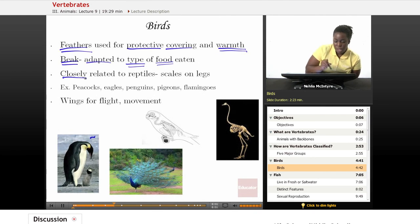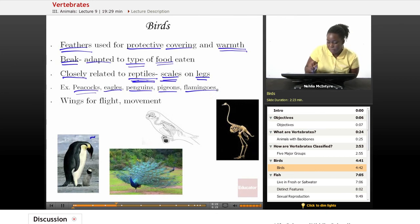Birds also are closely related to reptiles, which we'll talk about, because reptiles and birds both have scales on their legs. Well, birds have scales on their legs, and reptiles also have scales on their body. Some examples of birds would be peacocks, eagles, penguins, pigeons, flamingos.